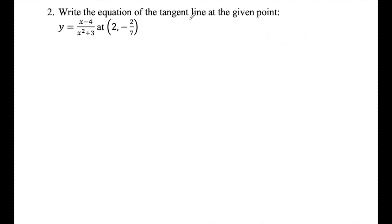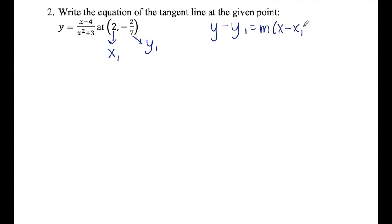Number two: write the equation of the tangent line at the given point. Here's y and here's the point. This one is a little bit nicer than number one because right in the beginning they give me x1 but they also give me y1 for plugging into the point-slope formula. In the previous example they didn't give me y1 — I had to find that by plugging the x value into the curve — so this is just one less step. I have y1, I have x1. The last thing I need to find is m, which I find by taking the derivative and plugging x in, because the derivative gives me the slope of the tangent line.